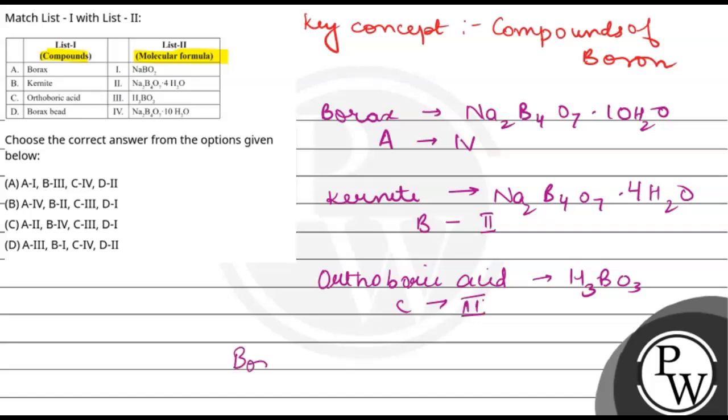And the last one is borax bead. So borax bead, this is a metaborate. So this formula is NaBO2. That means D is 1.